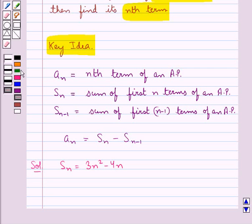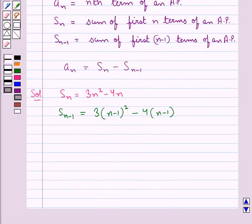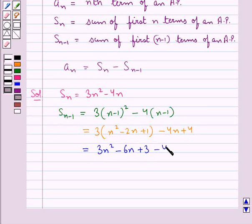Now let's find out S_(n-1). In place of n we put (n-1). So we have 3(n-1)² - 4(n-1). This equals 3(n² - 2n + 1) - 4n + 4. Further we get 3n² - 6n + 3 - 4n + 4.